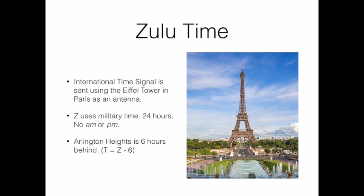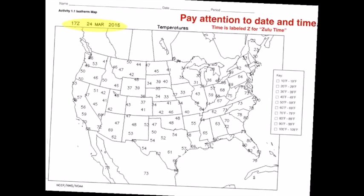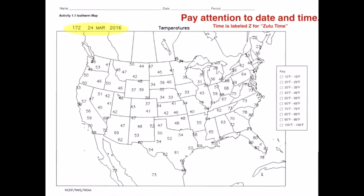Zulu time can also be called Greenwich Mean Time. It's based on the time at the Royal Navy Observatory in Greenwich, England. There is no a.m. or p.m. in Zulu time, and Arlington Heights time is six hours behind. If we subtract six hours from the date and time on the top of our paper we'll see that it was 11 a.m. on March 24th of 2016.